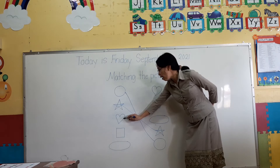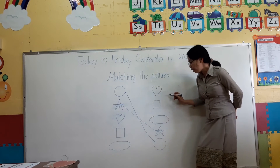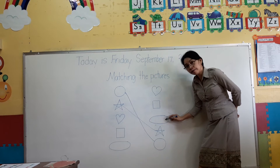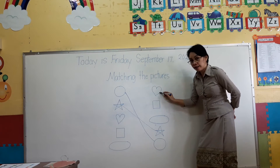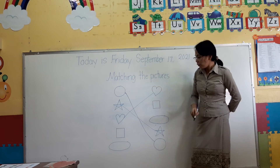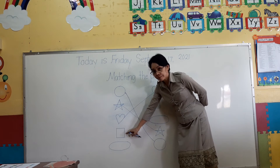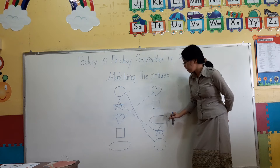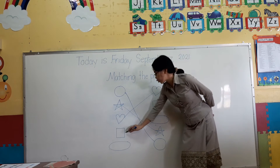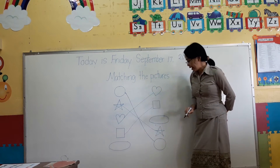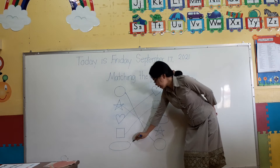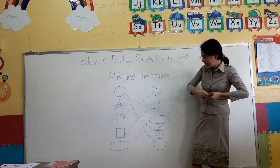What about this one — a heart? Where is the other heart? Is this one? No. Is this one? Yes, this is a heart. Very good. What about this one, children? This is a square. Where is the other square? Yes. So draw a line. Very good. And this one: oval. They are the same, so let's draw a line. Very good.